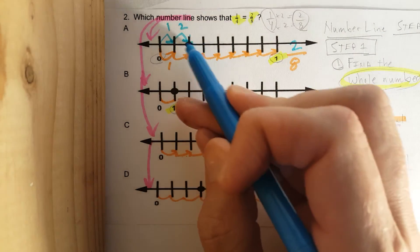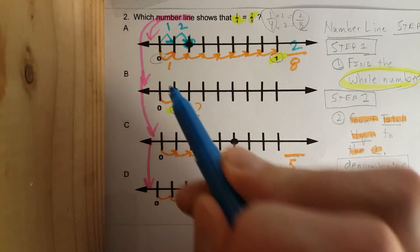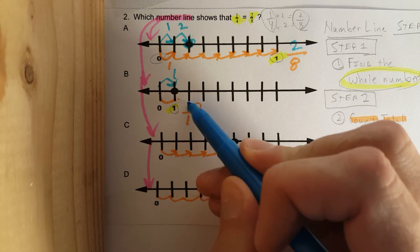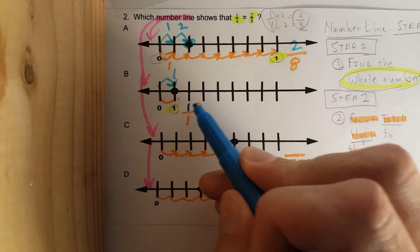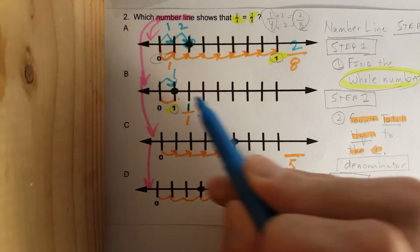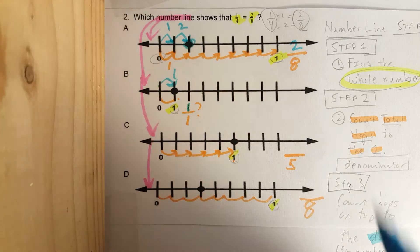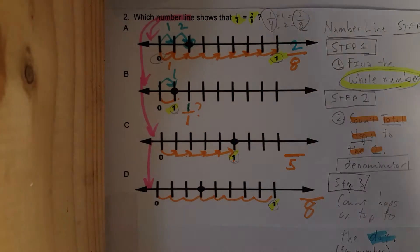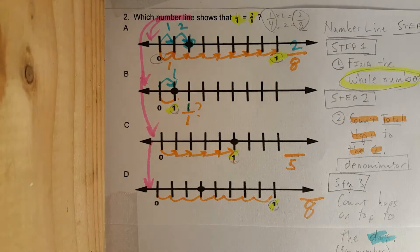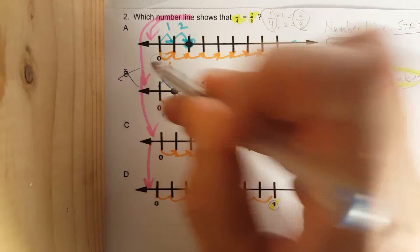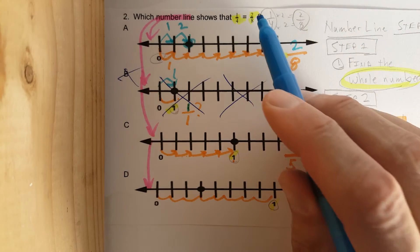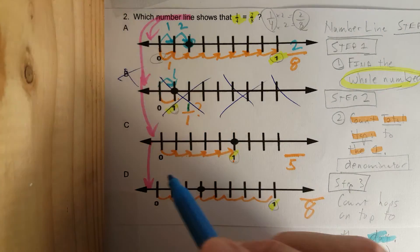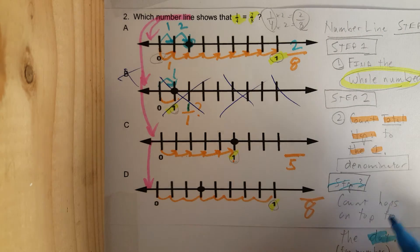On number line B there's only one hop to the dot, so every single mark leads to one whole number — that would make it one over one. By process of elimination, get rid of B right now. It's looking like A is correct because we have two over eight and two over eight.